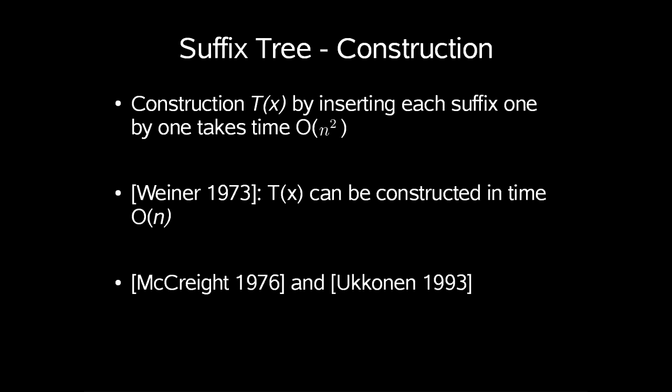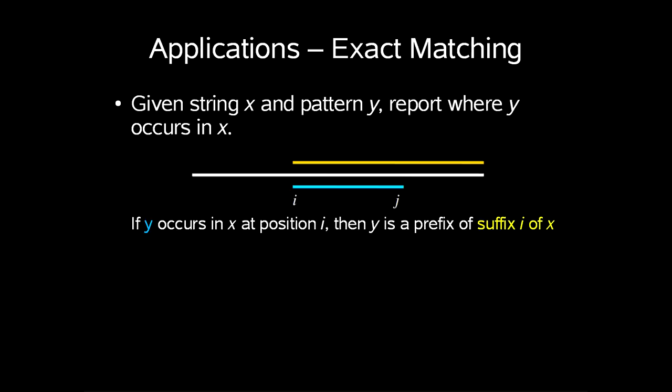Two algorithms used for constructing the suffix tree, McCray in 1976 and Ukunin in 1993, which highly simplify the algorithm behind Weiner's theories. So, what are the applications of this? Why do we actually need to construct these suffix trees?